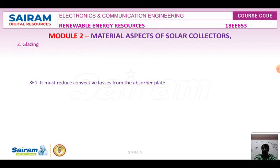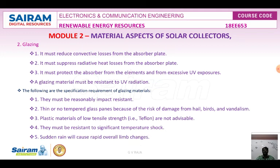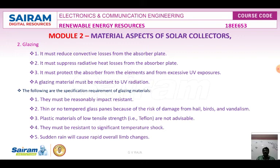The coating must not be so thick that heat conduction through the paint to the absorber material is impacted. The glazing or glassing material is one or more sheets of glass or radiation-transmitting material used as a transparent cover. Its important functions are: it must reduce convective losses from the absorber plate, suppress radiative heat loss, and protect the absorber from elements and excessive UV ultraviolet exposure. A glazing material must be resistant to ultraviolet radiation.